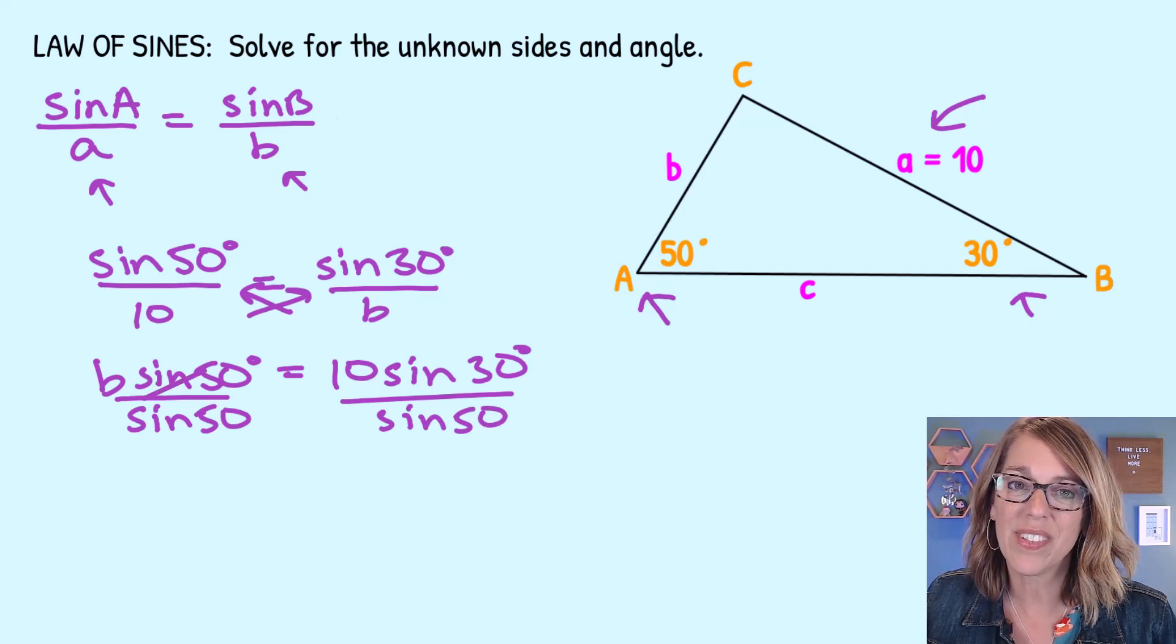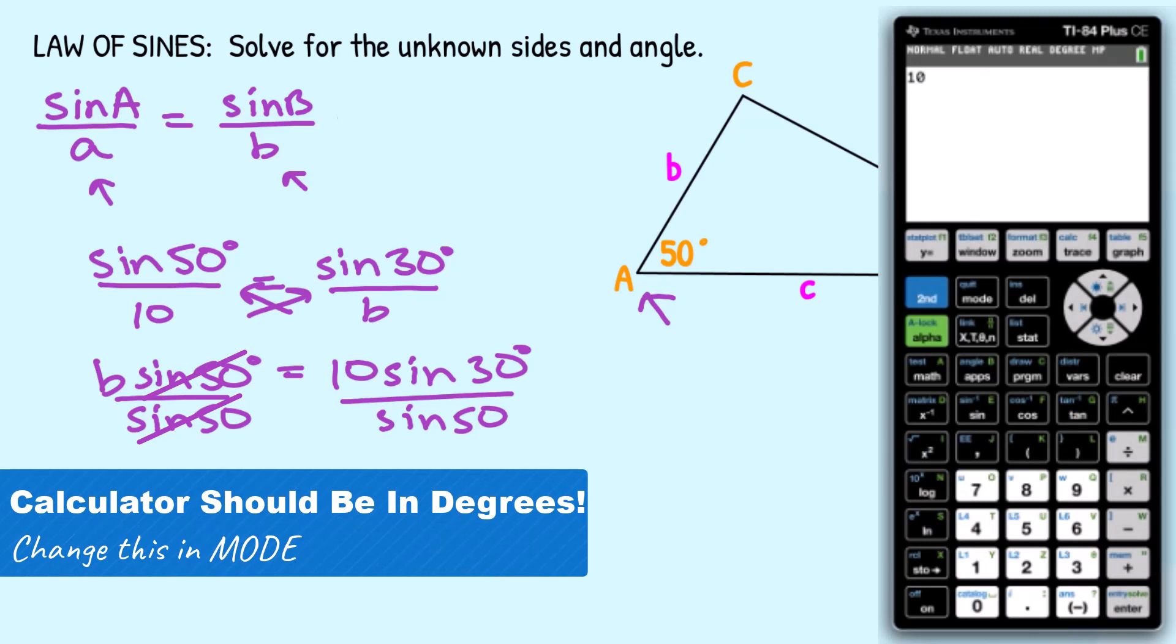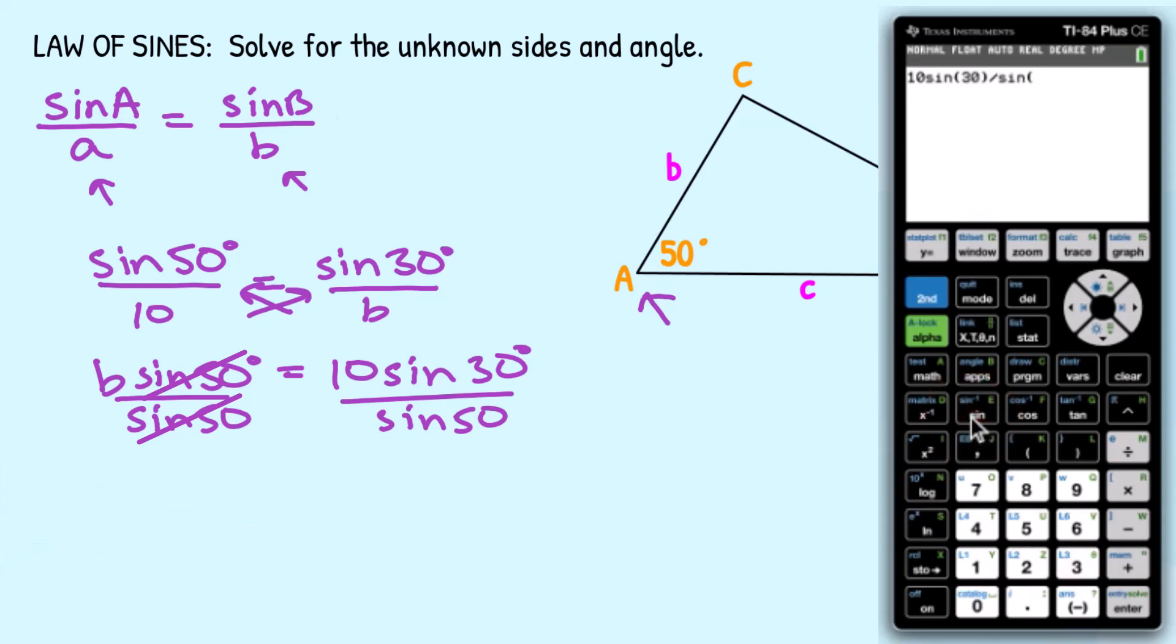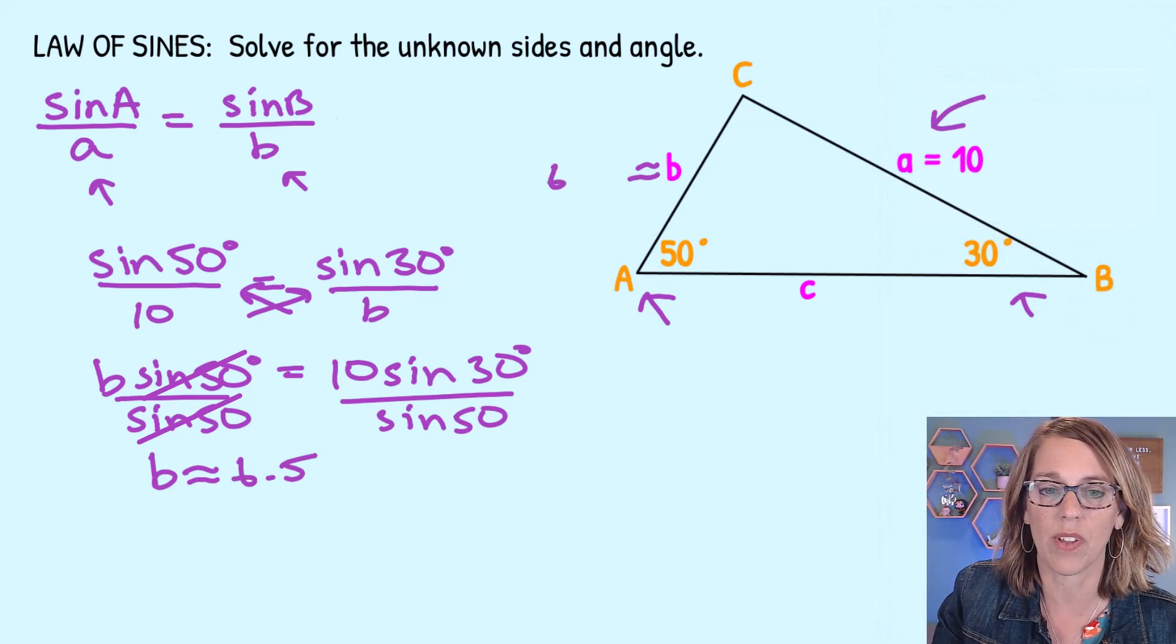Let's put all of this into the calculator. Now I can put this right into my calculator. So 10 times the sine of 30 divided by the sine of 50. And I end up with 6.527. Let's call that 6.5. So length B is about 6.5 units, whatever that happens to be.